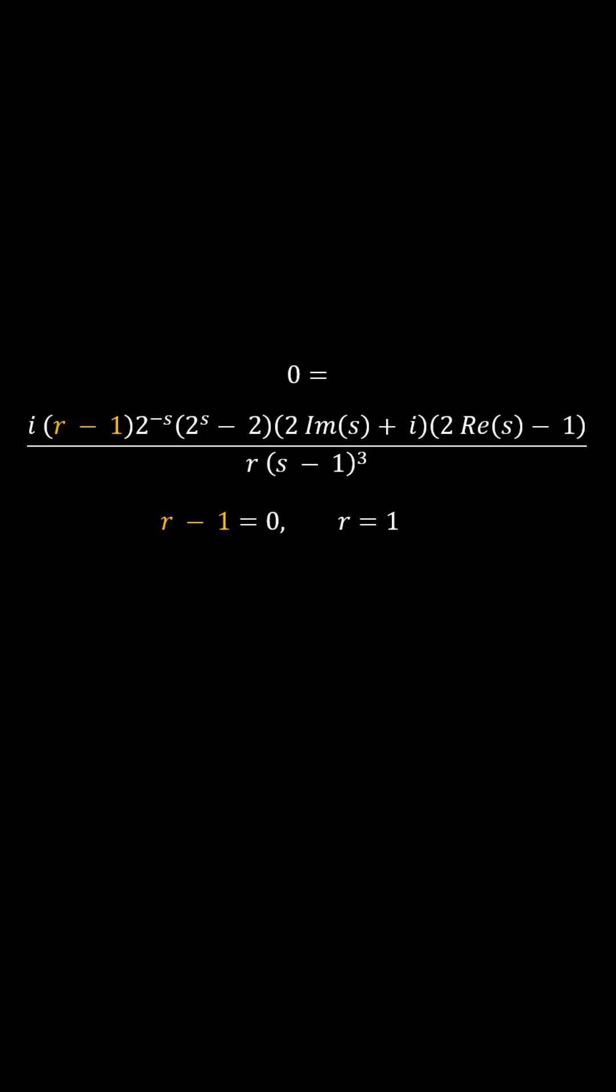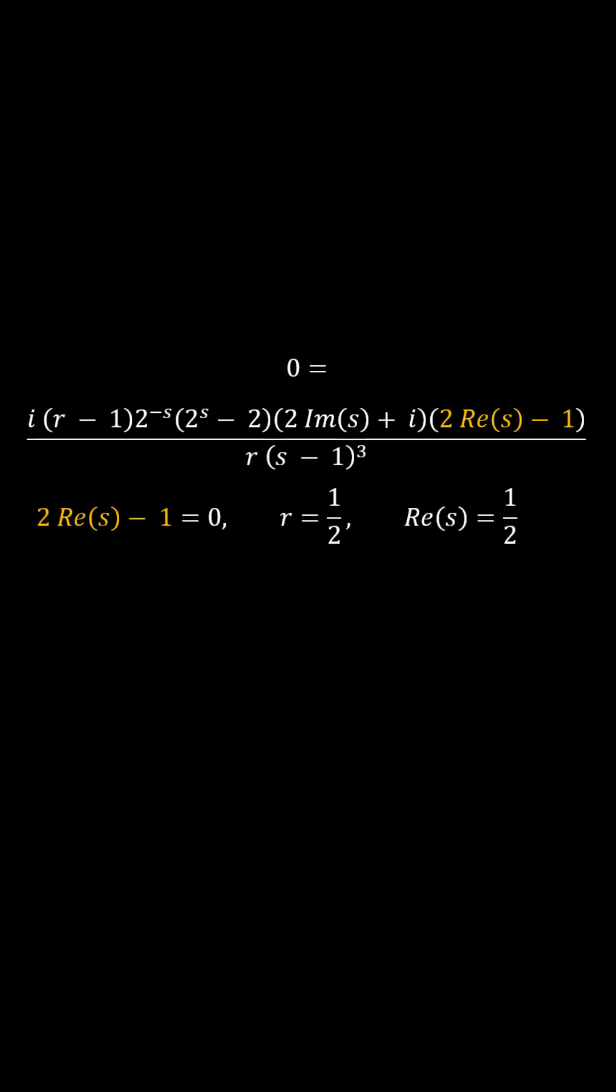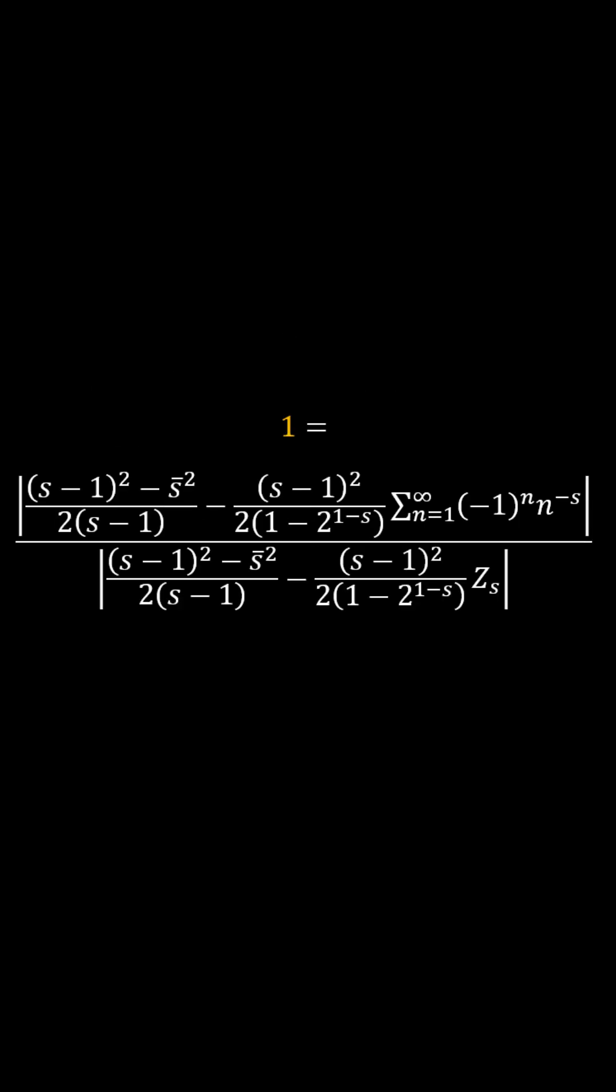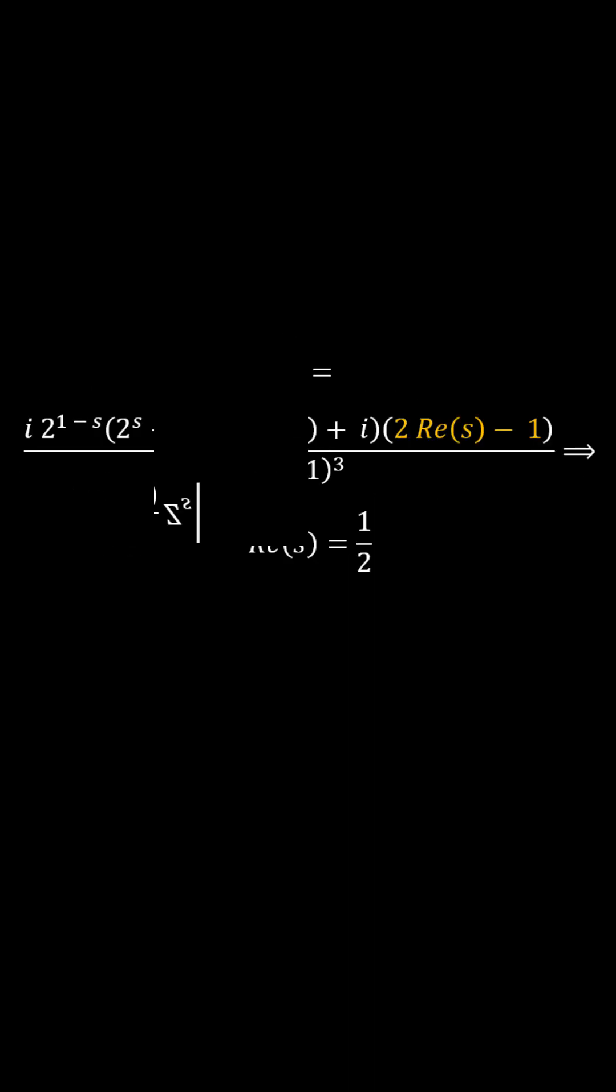One gets two solutions for r, and those solutions are either one or one half. Backing up a few steps, substituting one in for r, and solving for the general solution for all the non-trivial zeros, gives real part one half, when r equals one.